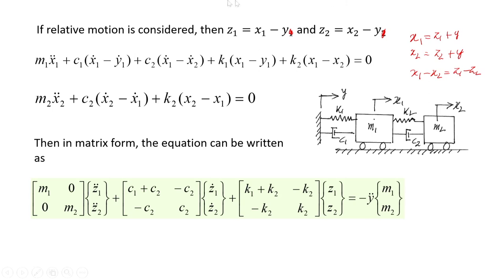After substitution, c2 terms become c2(z1-dot minus z2-dot) and k2 terms become k2(z1 minus z2). For the second mass, the equation of motion becomes m2·x2-double-dot plus c2(x2-dot minus x1-dot) plus k2(x2 minus x1) = 0, which in relative coordinates is similarly expressed. We can now write the equations in matrix form.